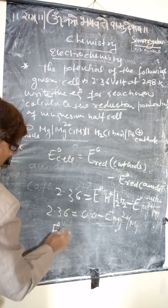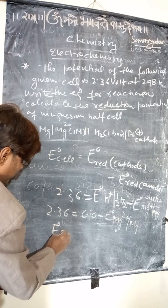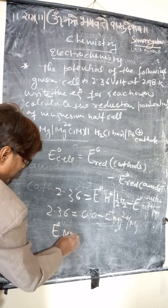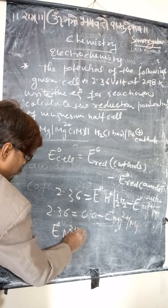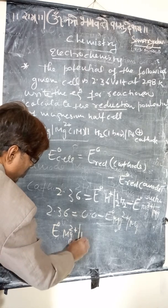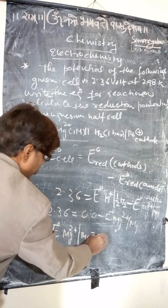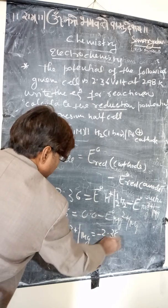Therefore, the reduction potential E° of Mg²⁺ | Mg equals minus 2.36 volts.